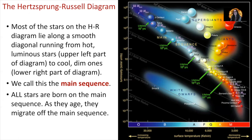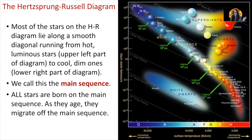All the stars living out the majority of their lives lie along the main sequence — this is where most of the stars in our universe reside. When a star is on the main sequence of the HR diagram, that star is fusing hydrogen into helium in its core, just like our own sun is doing. All stars are born along the main sequence, and as they age they migrate off the main sequence. As the star ages, it doesn't move along the spine of the main sequence; instead, it starts to pop off and becomes either a giant or a supergiant star, or at the very end of its lifetime it might become a white dwarf.